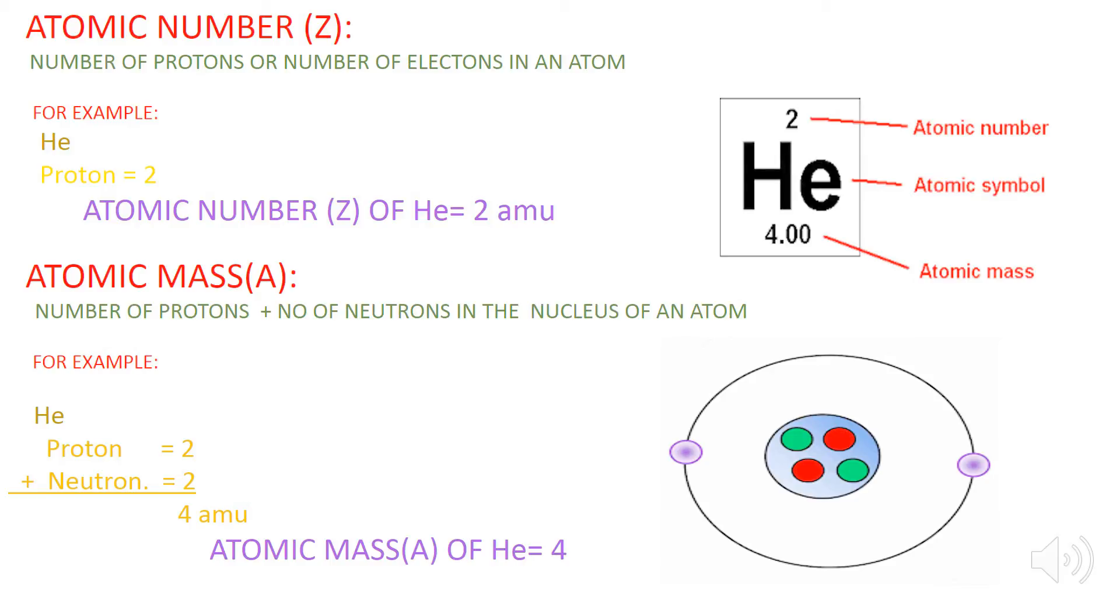Atomic numbers are written above the elements whereas the atomic masses are written below it. For example, we have a helium atom where the number of the protons is equal to two, which are represented by the red circles. Therefore, the atomic number of the helium is 2.